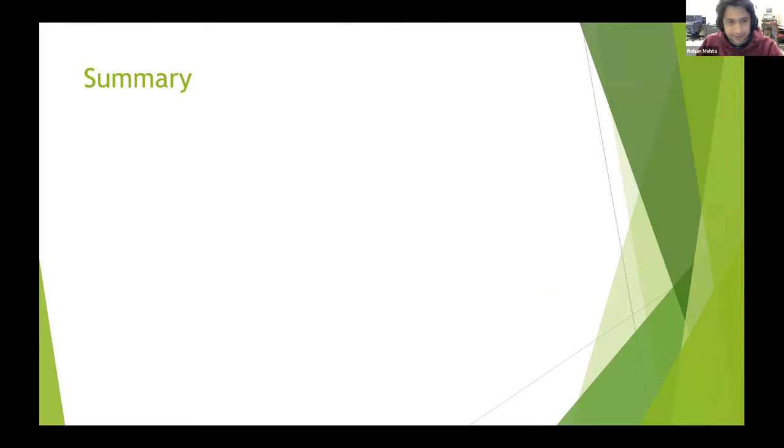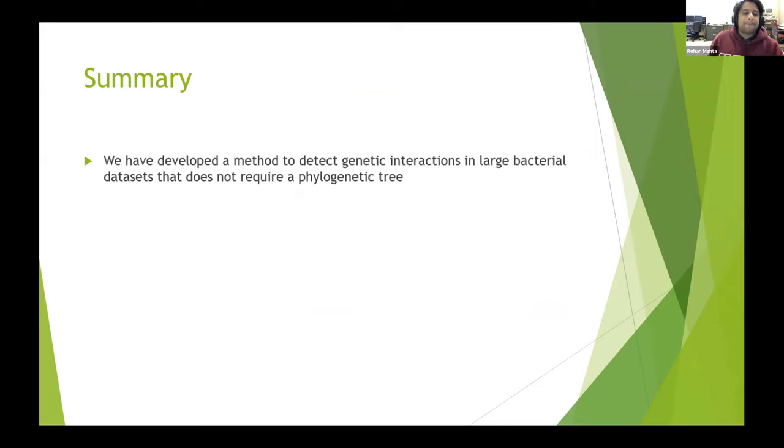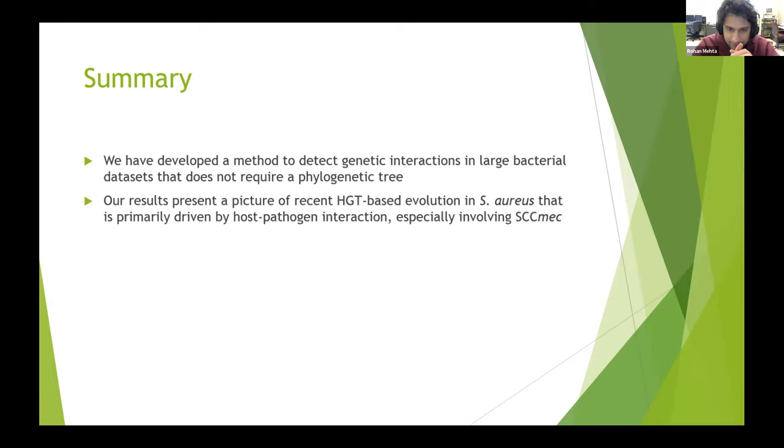I sort of blitzed through that in an effort to save some time, but in summary, I've made a method to detect genetic interactions in bacterial datasets on the order of thousands to tens of thousands of genomes. The thing about this method is it doesn't require a phylogenetic tree, it just requires a distance matrix, and you don't have to traverse the tree all the time to do anything with it. We can see from the results that the recent evolution of Staph aureus in the accessory genome is primarily driven by host-pathogen interaction, especially involving SCCmec and virulence. The majority of interactions are positive, which again seems to concur with other results in different systems, so maybe this is a general pattern of genome evolution in bacteria.